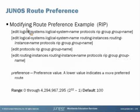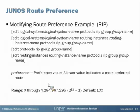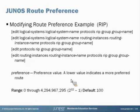How would you modify the route preference? In this example we're modifying it for RIP, the Routing Information Protocol. You would modify it under any one of four stanzas. Most commonly you would do it under edit protocols RIP group and then the group name, and modify the preference value. The default of 100 can be modified from 0 to 4 billion. Again, the lower the value the more preferred the route.